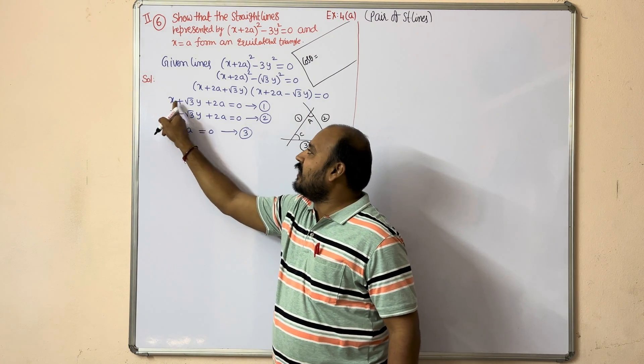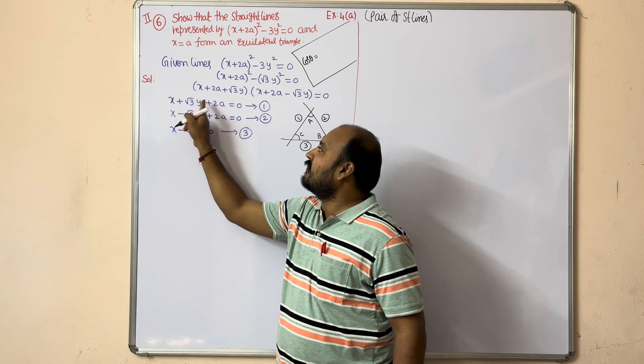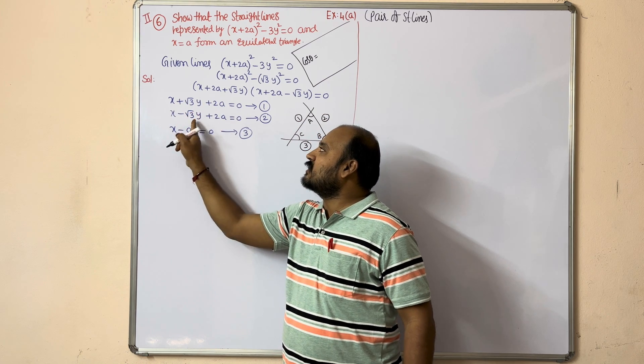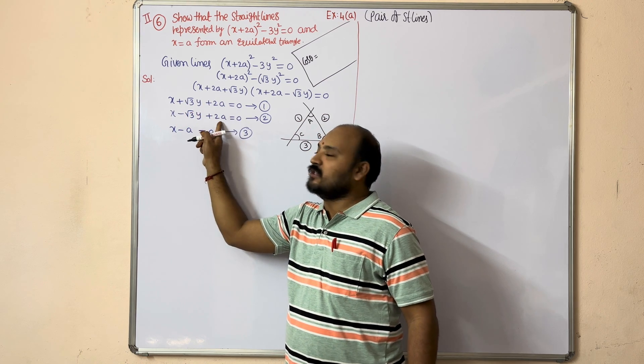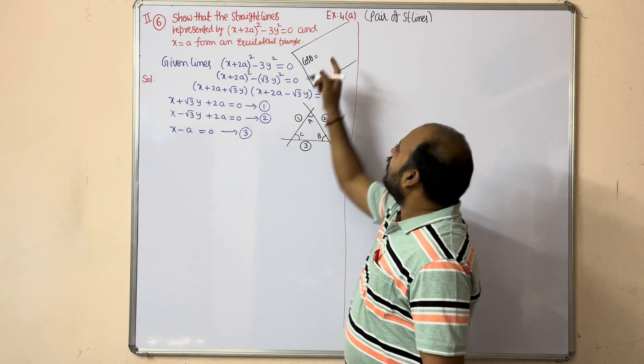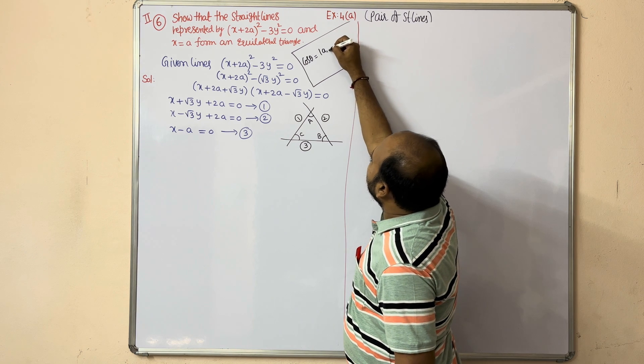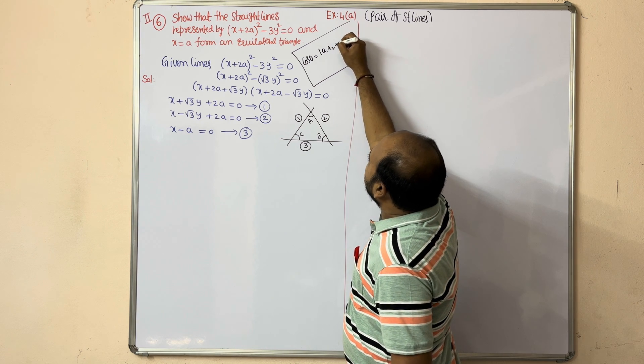cos θ = |a₁a₂ + b₁b₂| / (√(a₁² + b₁²) · √(a₂² + b₂²)).